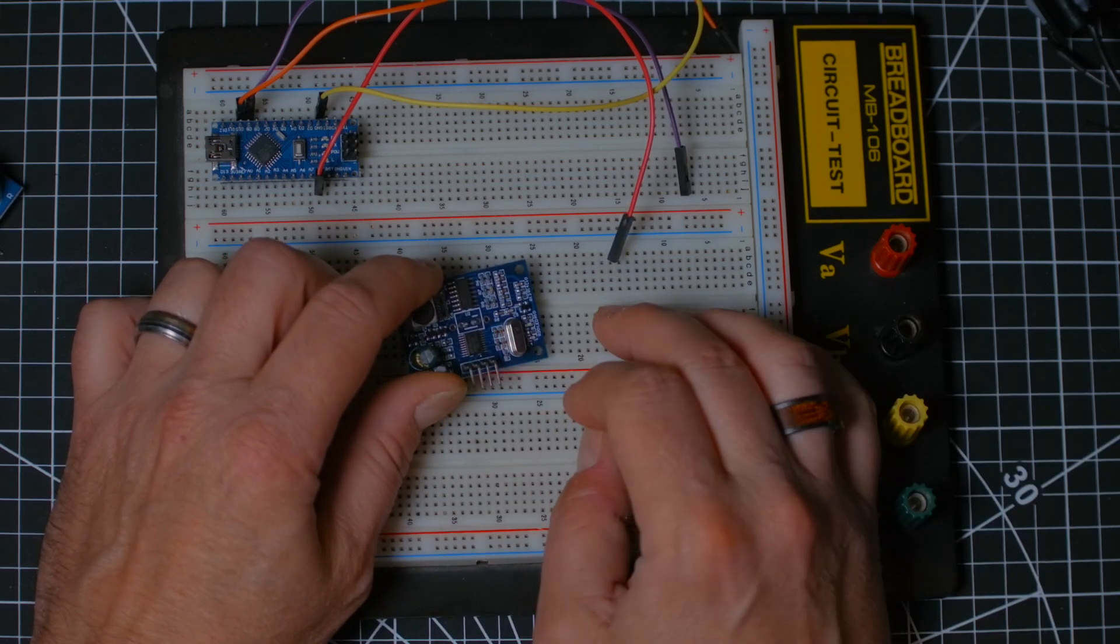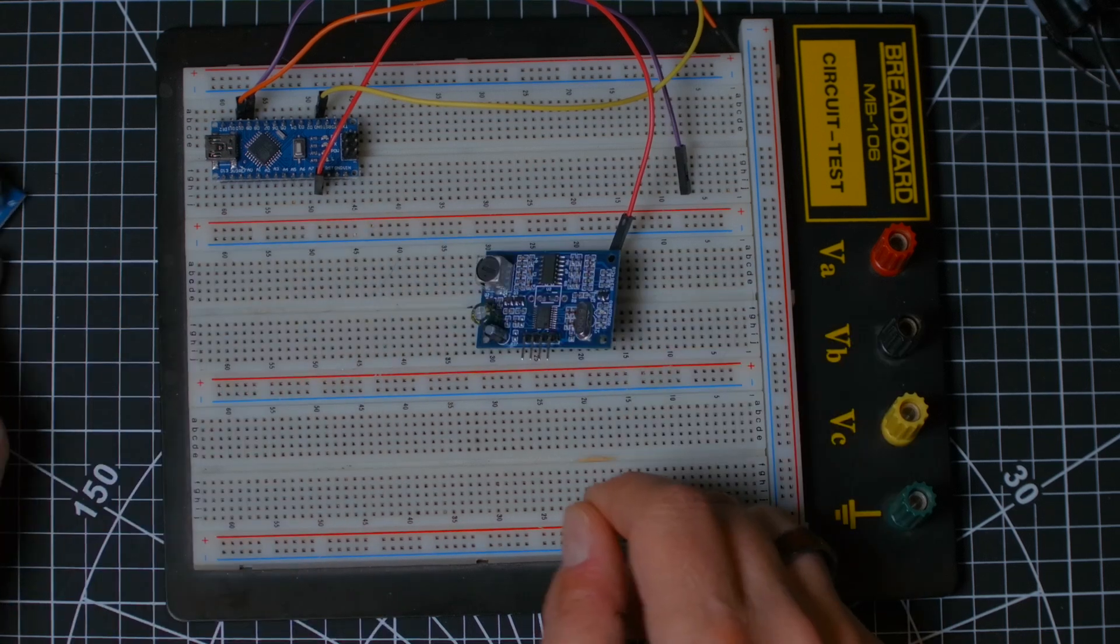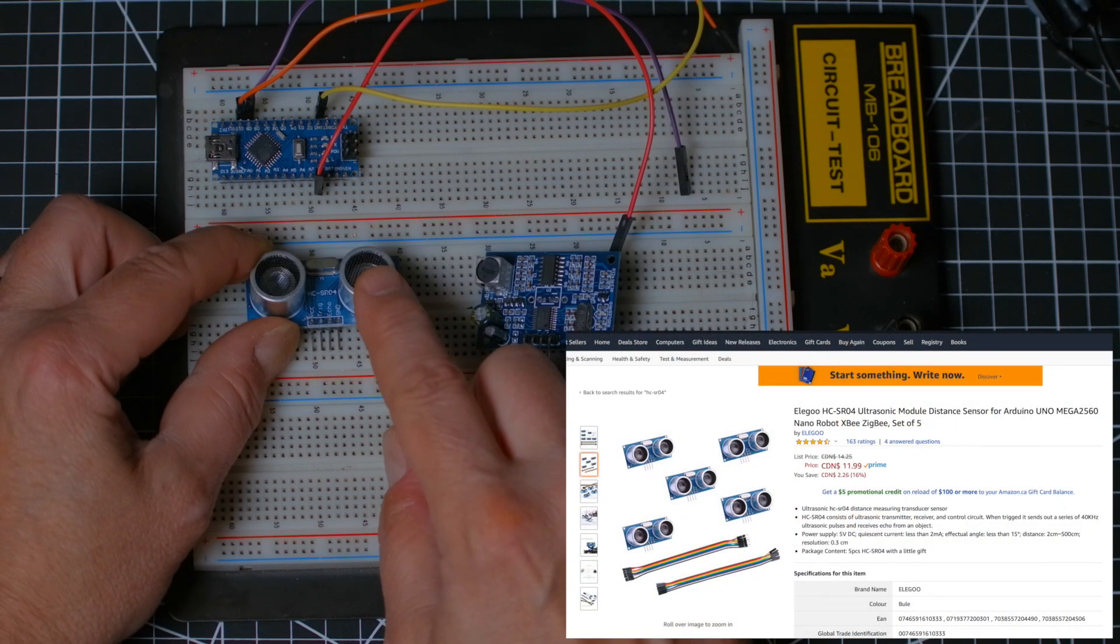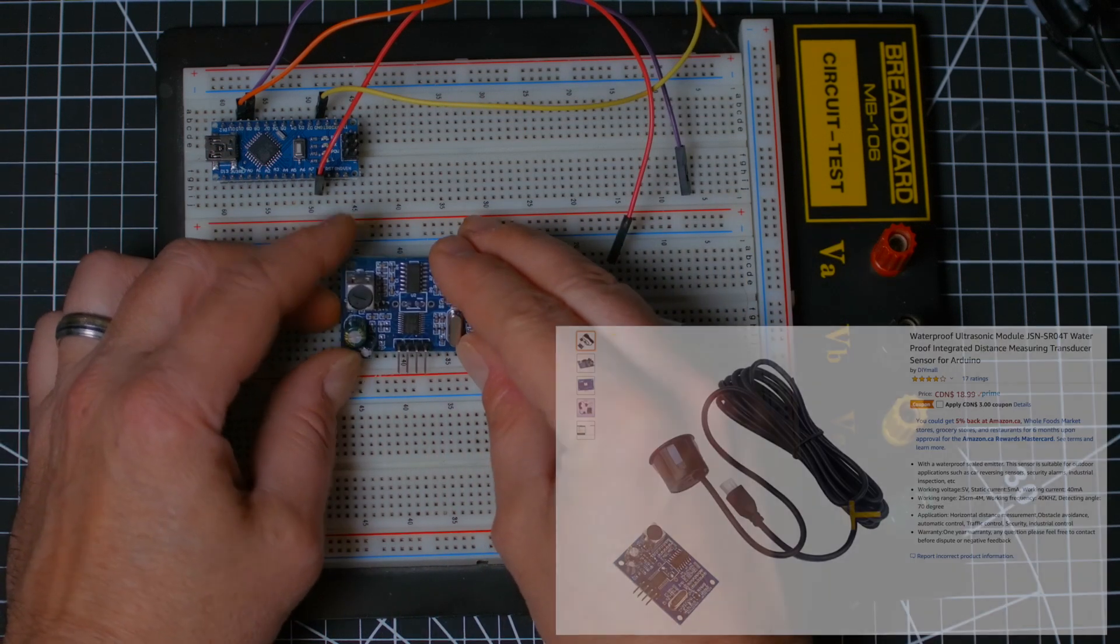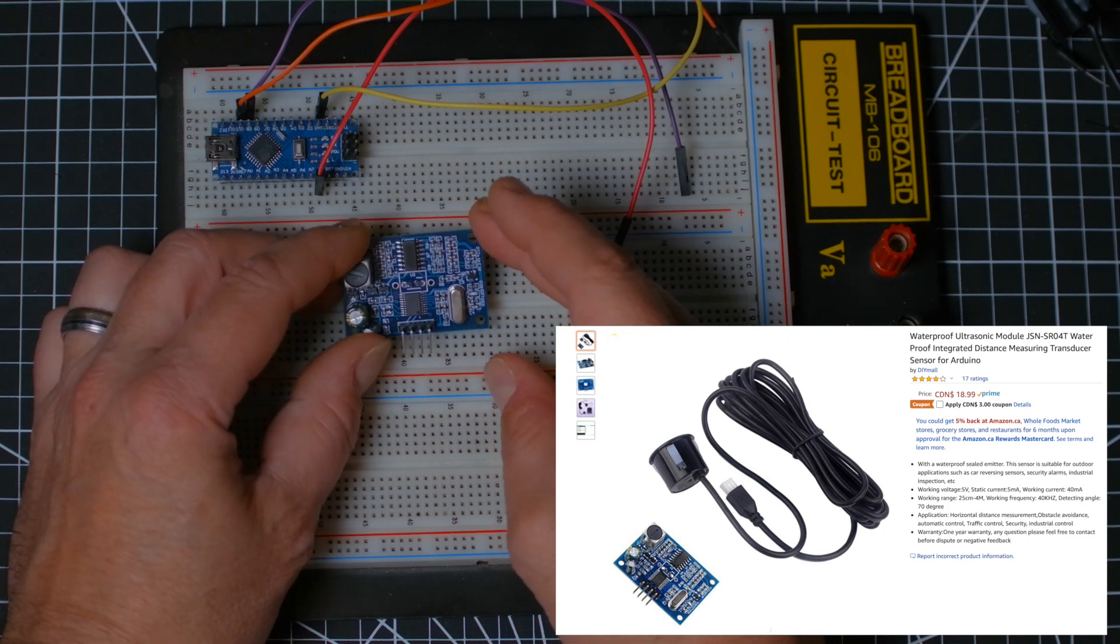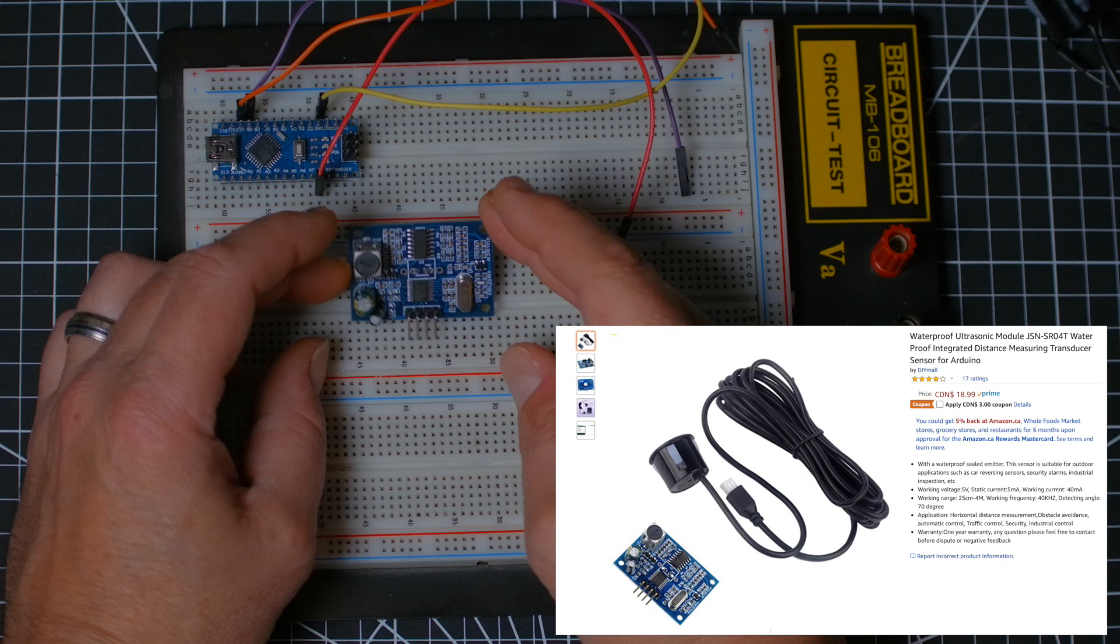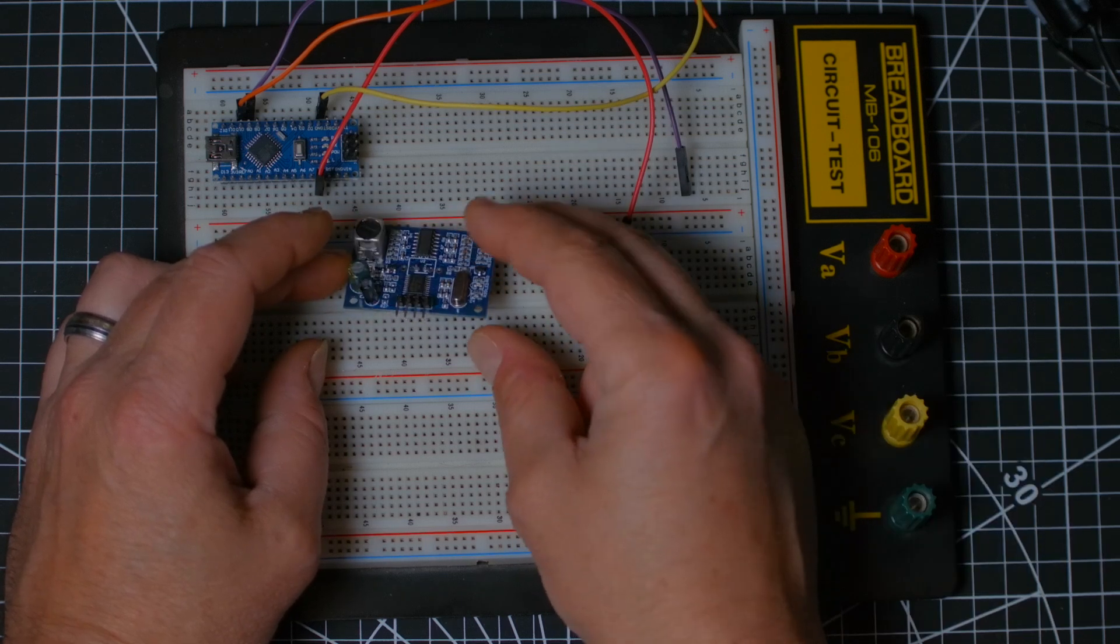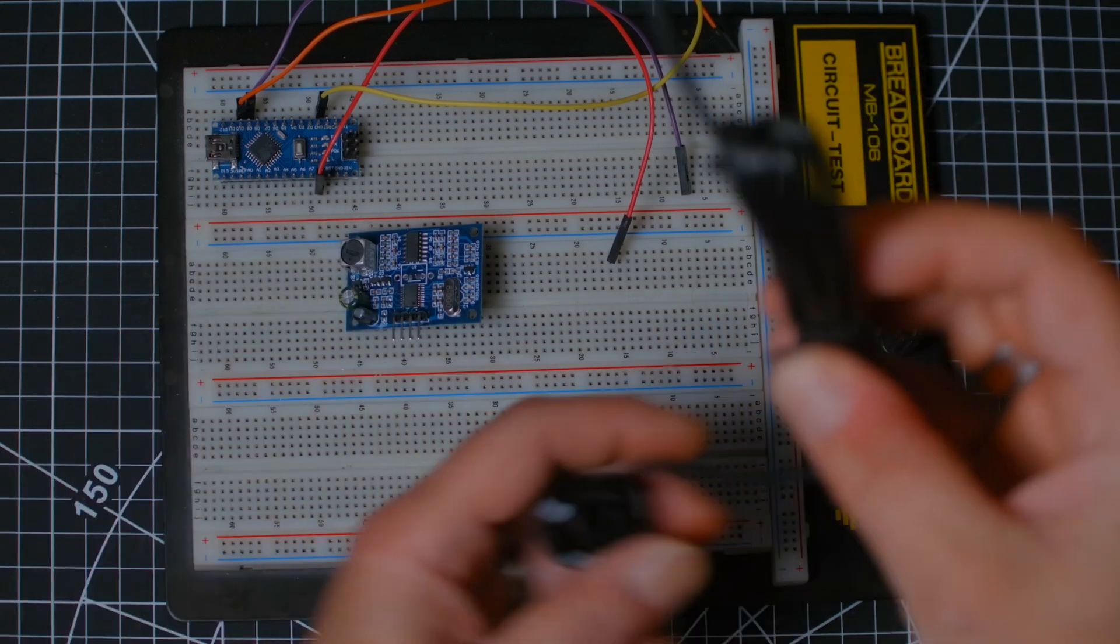Now for price, these guys have been around for a long time so they're very cheap right now. You can probably get one for three bucks. These are fairly new and the best price I found on Amazon in Canada was $18 Canadian, but you got a coupon for three bucks, so 15 bucks Canadian for this guy. It's not too bad when you consider that you're getting a 2.5 meter cord attached to it with the sensor that is waterproof.